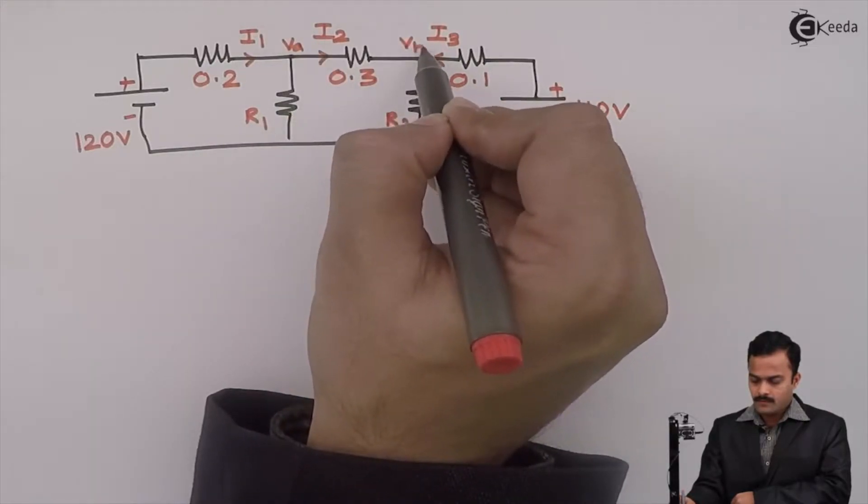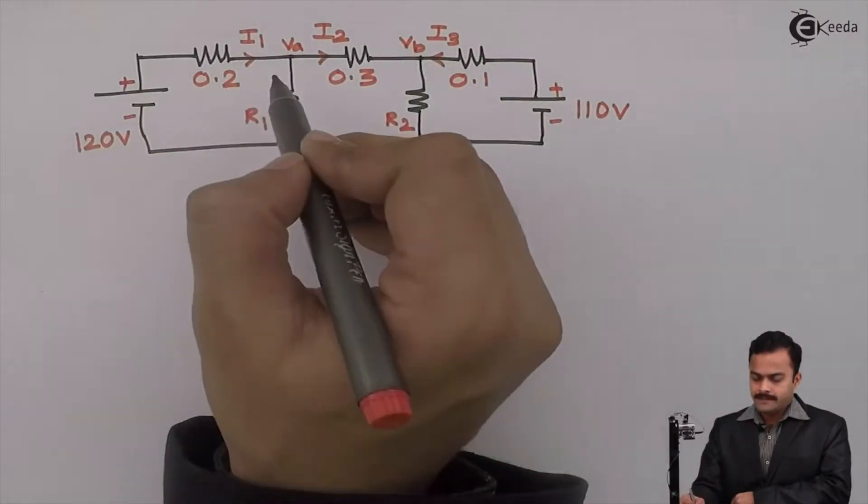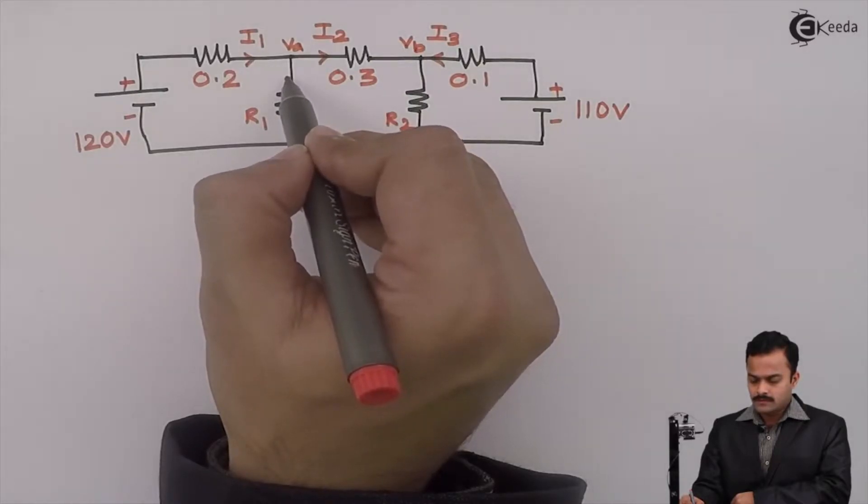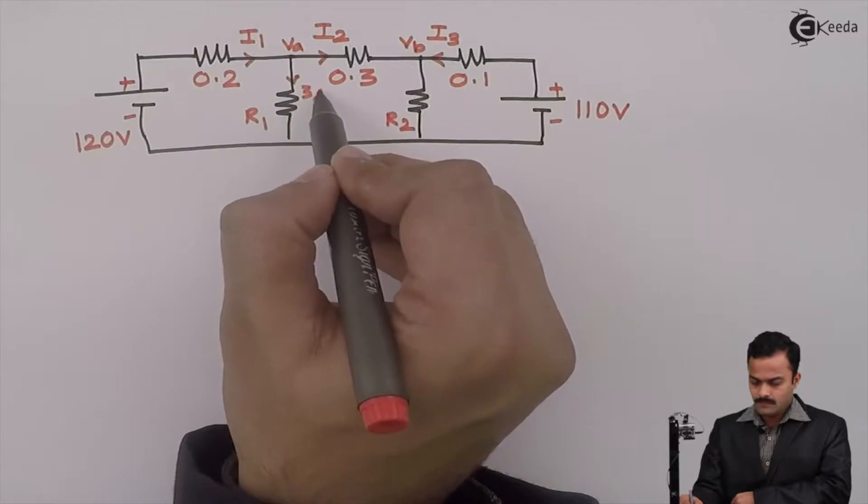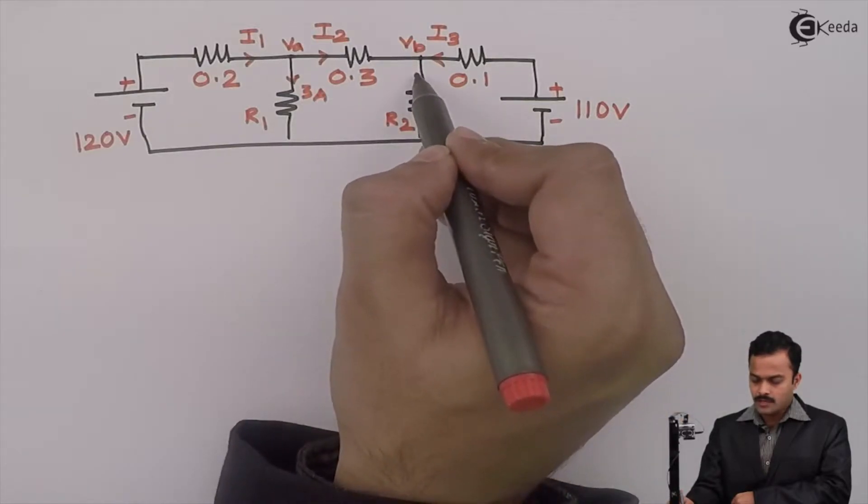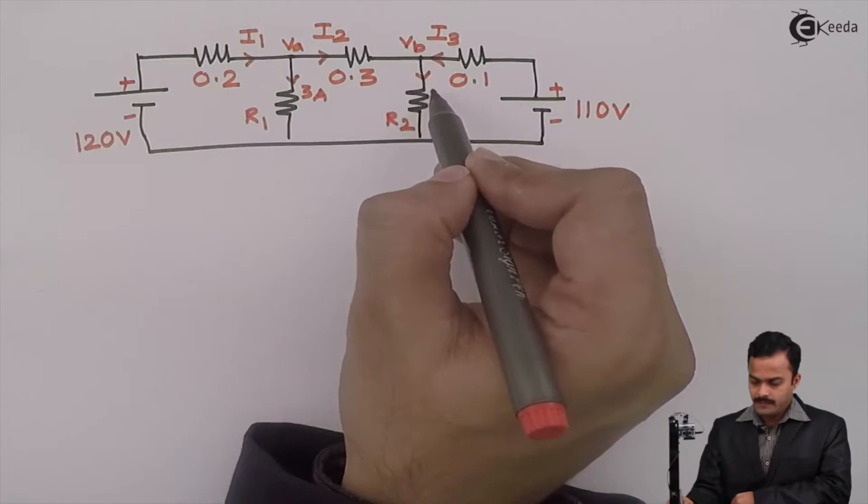Vb and current flowing through R1 is given as 3A and current flowing through R2 is given as 20A.